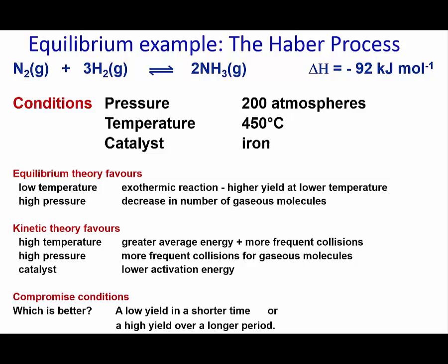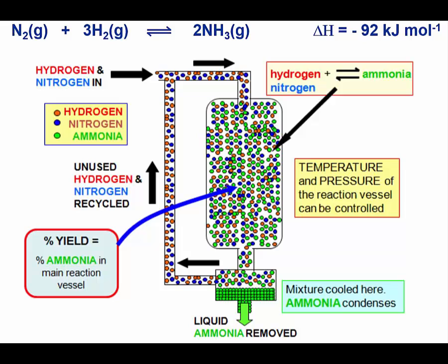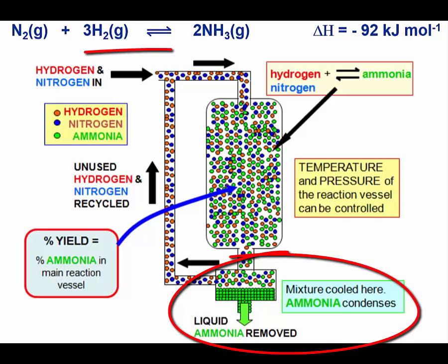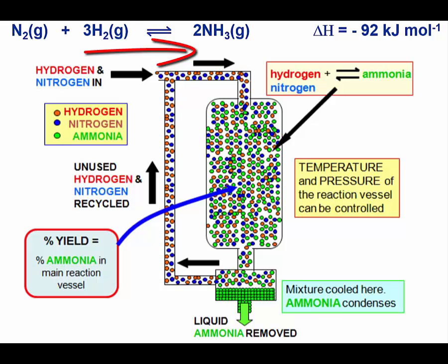The Haber process is a good summary of how equilibrium is useful in industry. In this process, the ammonia which is needed to make fertilizer and feed the world's population is created. Ammonia is constantly removed from the system by cooling and selectively condensing it out. This then pushes the reaction to go to completion. Because the forward reaction is being constantly pushed in this way, the use of the iron heterogeneous catalyst speeds up the process.